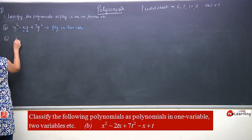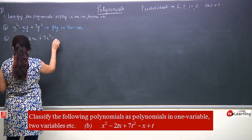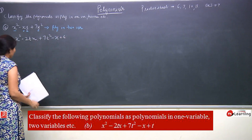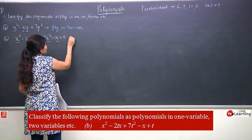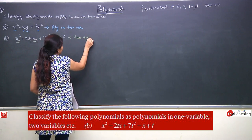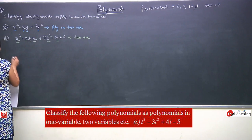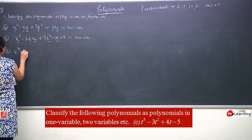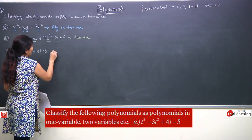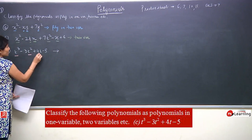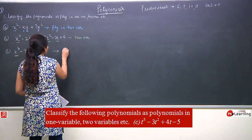The second part is x² minus 2tx plus 7t² minus x plus t. Again checking the variables: we see x and t, so this is also a 2-variable polynomial, with all powers being positive integers. The third is t³ minus 3t² plus 4t minus 5. Here there is only one variable t, and all powers are whole numbers, so this is a one-variable polynomial.